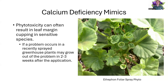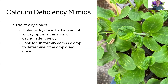Also, phytotoxicity — oftentimes we see leaf margin puckering occurring, such as from an Ethephon application shown here on geraniums. You'll see it in some very sensitive species, not all. If this is the problem, you know your crop was good, but you just sprayed and then started seeing this — think phytotoxicity. The plant should grow out of it in roughly two to three weeks and the new growth is going to look good. Understanding the time of application to when you're seeing the problem is very important to diagnosing if it's phytotoxicity or a calcium uptake problem.